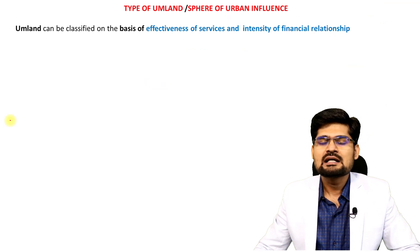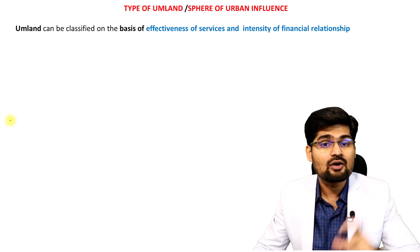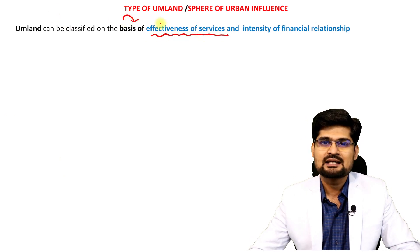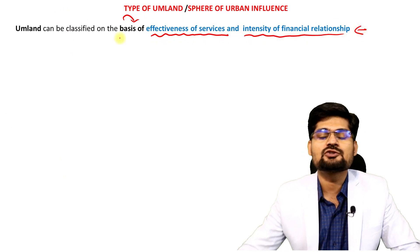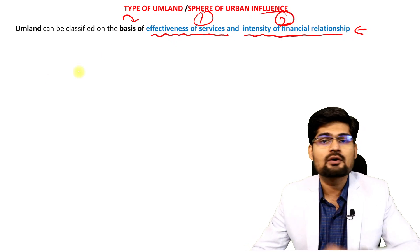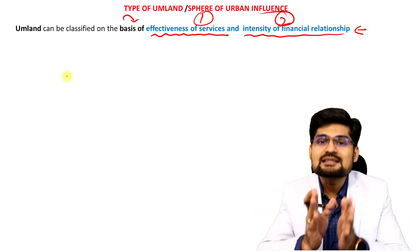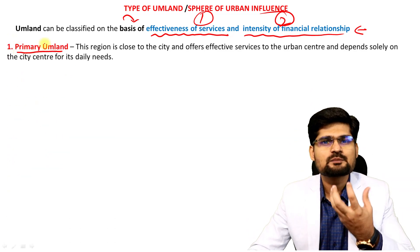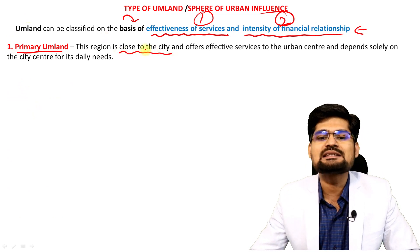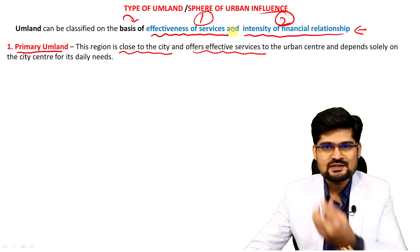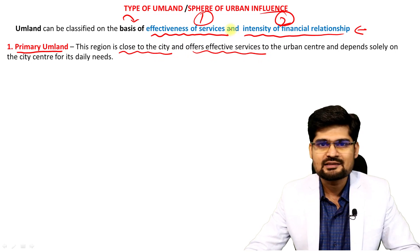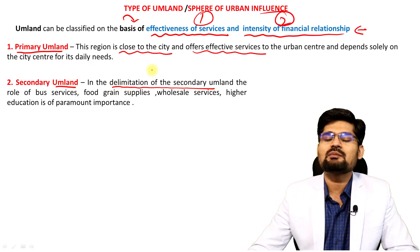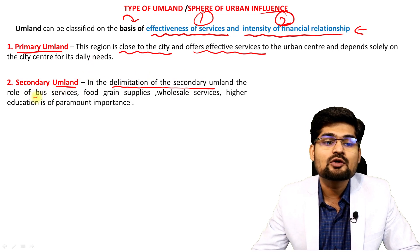Umland can be classified on the basis of the effectiveness of services and the intensity of the financial relationship. The first type is called primary umland — the region close to the city that receives effective services of the city region. The second is secondary umland, which involves the delimitation of services that extend further outward, including bus services, food grain supplies, wholesale services, and higher education.